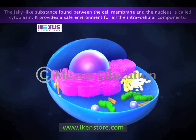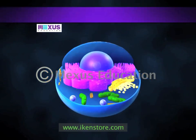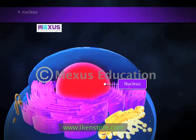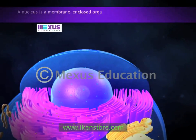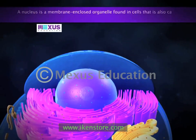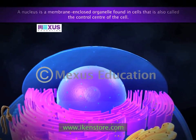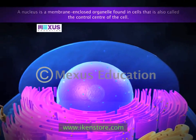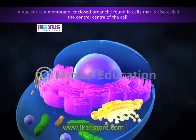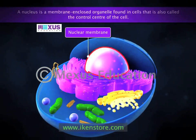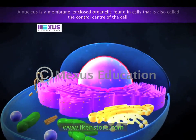The cytoplasm is in motion, moving materials such as nutrients from one part of the cell to another. The nucleus is a very important component of the living cell — it is a membrane-bound organelle also called the control center of the cell. It is generally spherical and located in the center of the cell, separated from the cytoplasm by a membrane called the nuclear membrane. There is a smaller spherical body inside the nucleus called the nucleolus.